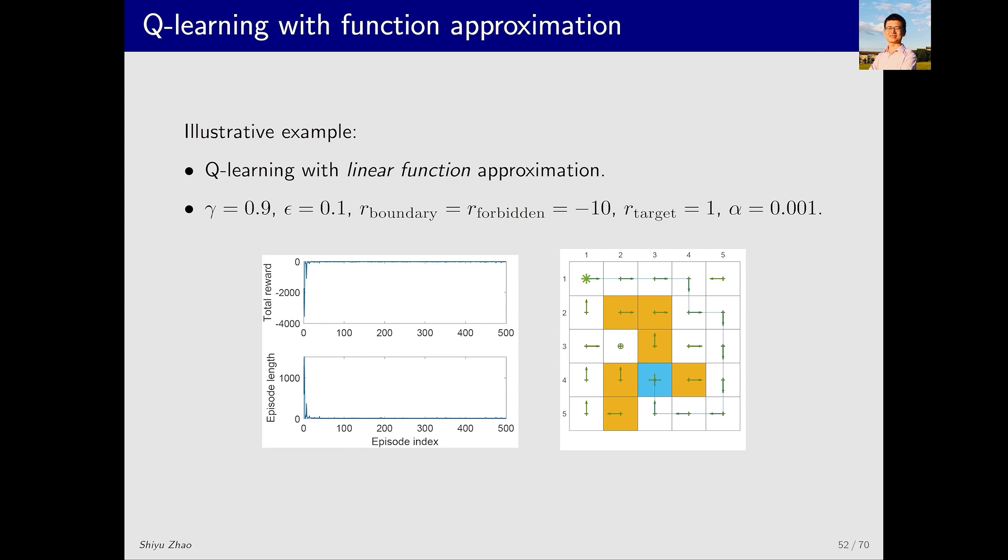Next let's look at an example. This example combines Q-learning with linear function approximation, where Q hat equals phi transpose W. The task here is to find a good path from the starting state to the target state. As you can see, the final policy is quite good. The left graph shows the convergence process. Initially the return is negative, but it quickly converges to higher values. The episode's length starts off long due to the poor policy, but it also quickly converges to a shorter value.